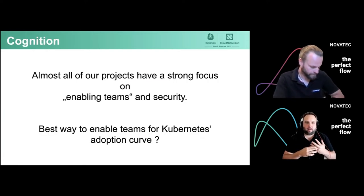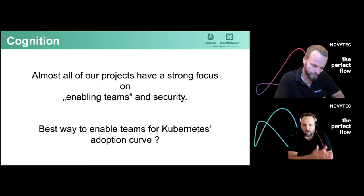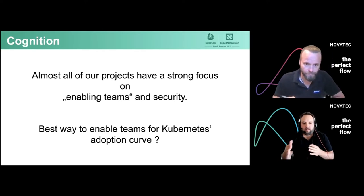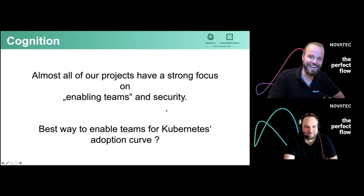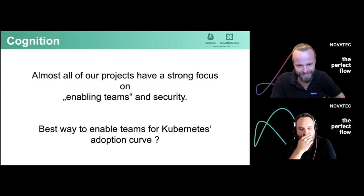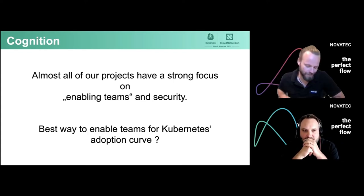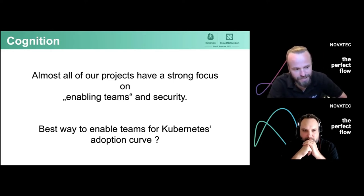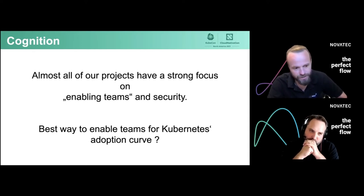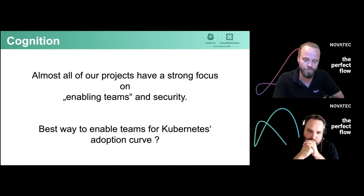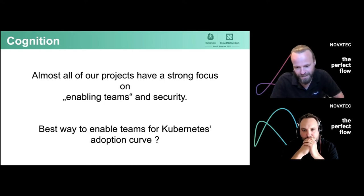In summary, you'll recognize that almost all our projects have a strong focus on enabling teams, particularly for security. Going from business to technology — the technology landscape changes across projects. We use Kubernetes with IBM Cloud, monitoring stacks with Instana and Grafana, and automation with Ansible and Jenkins. All of this revolves around Kubernetes.